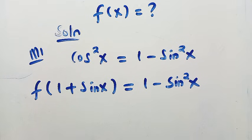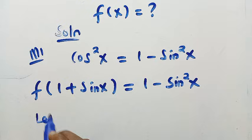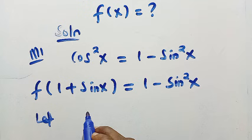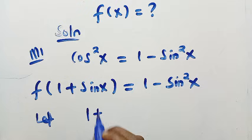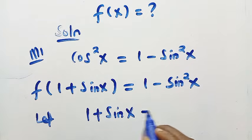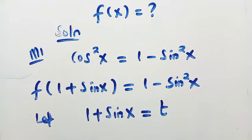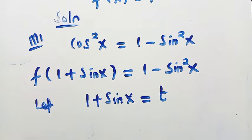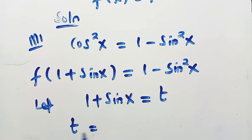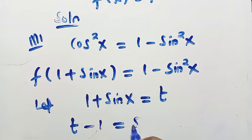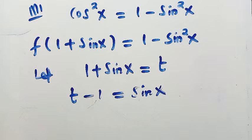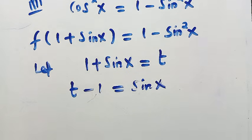After getting this, we are going to let 1 plus sin x be another letter. If I choose letter t to equal this, therefore we have 1 plus sin x equals t. By making sin x the subject of the relation, we have t minus 1 equals sin x. We can also say sin x equals t minus 1, any one of your choice.